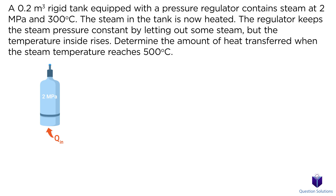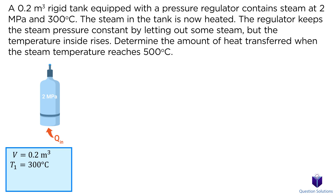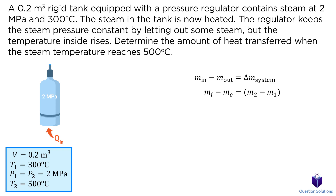Let's start off by writing down what we know. The volume of the tank is 0.2 cubic meters. Initially, the temperature of the steam is 300 degrees Celsius and the pressure is 2 MPa. The final temperature is 500 degrees Celsius. We will take the tank to be our system. Starting with the mass balance equation for a control volume: we know that mass doesn't enter the system, so that term is zero. We're left with just the mass that leaves the system on the left side.